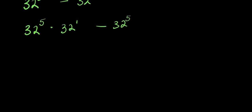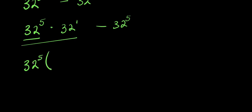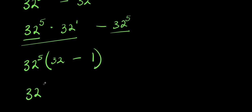From here I can factor out 32 to the power 5. Factoring out 32^5 from both terms gives us 32^5 times (32 minus 1), and 32 minus 1 is 31. So we have 32^5 times 31.